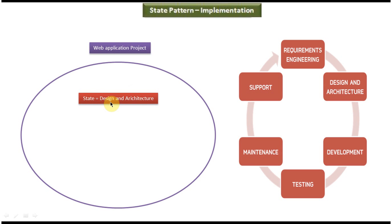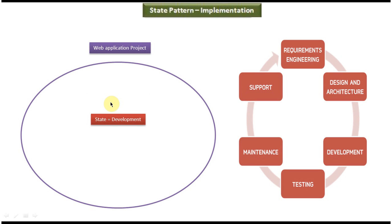Once the requirement gathering is done, the state of the project will be moved to the design and architecture phase. In this phase we can design the project — meaning we can create class diagrams, sequence diagrams, and decide what kind of technology we are planning to use in order to develop the application.